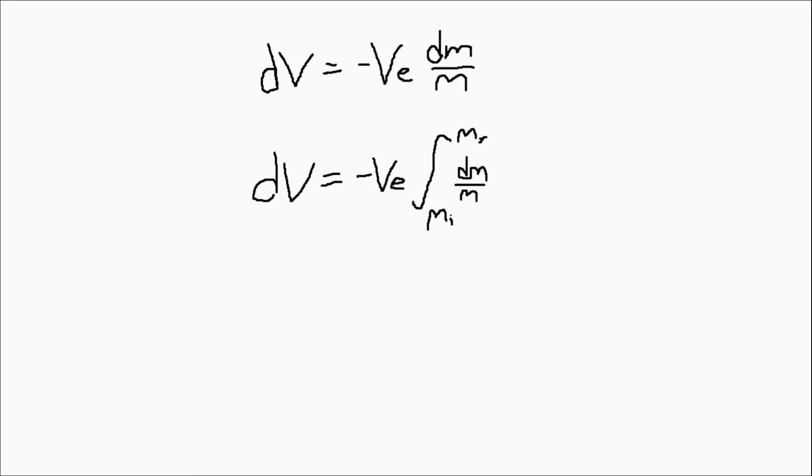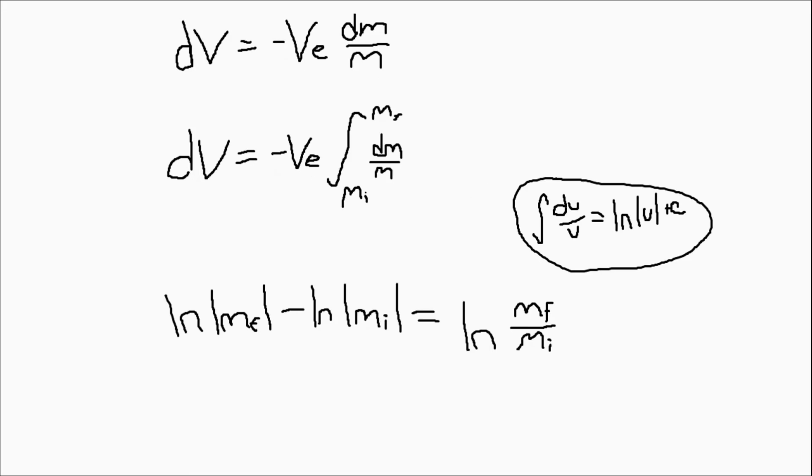We already know from calculus class that the integral of the derivative of U over U is the natural logarithm of U. So, if we apply the same logic to this situation, we know that the answer is the natural logarithm of M evaluated from the initial value of M to the final value of M.